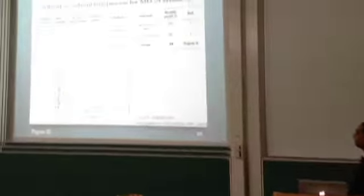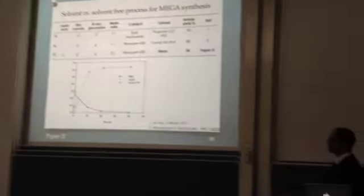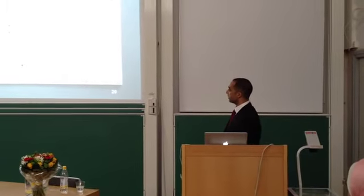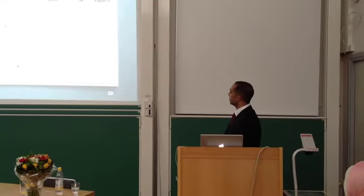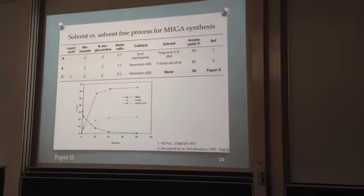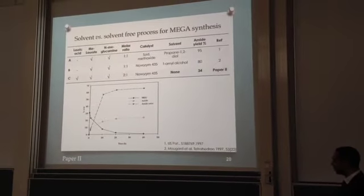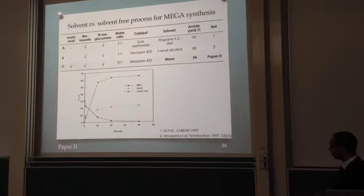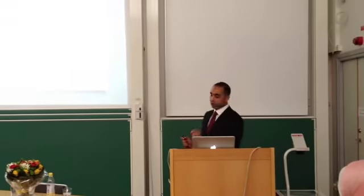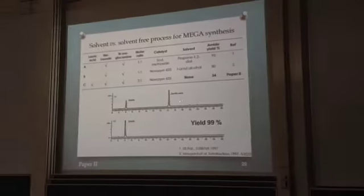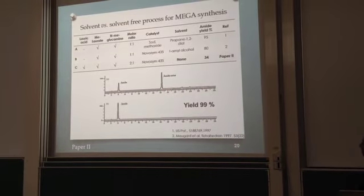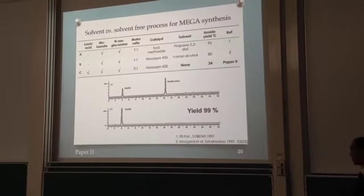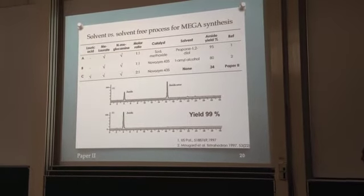We developed a solvent-free process for the production of the omega compound using a combination of lauric acid and ethanolamine in a molar ratio of 2 to 1. In comparison to previous reports, our initial yield was 34%. The time course of the reaction shows that amide ester is the main byproduct formed during the reaction. To solve this problem and increase the yield, we managed to hydrolyze the amide ester using a simple hydrolysis step applied to the reaction mixture, and a final yield of 99% was obtained.